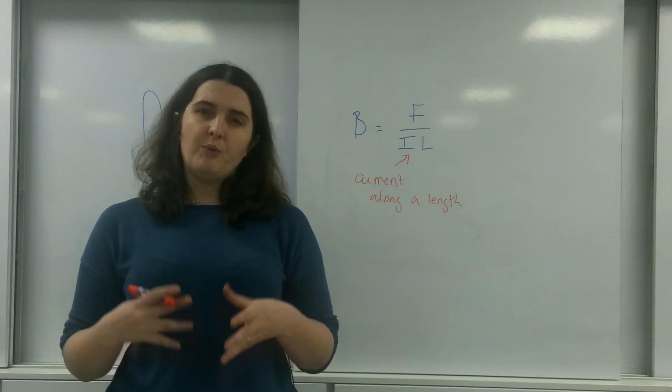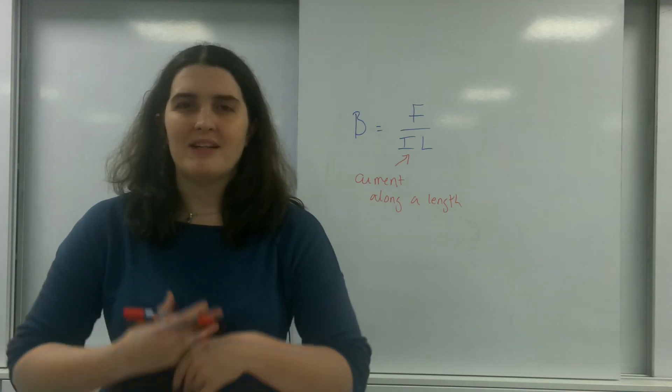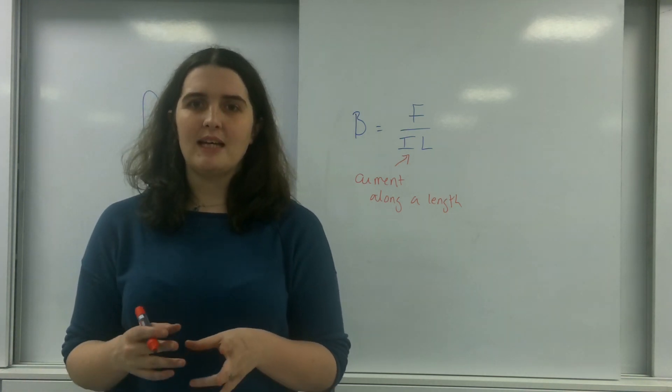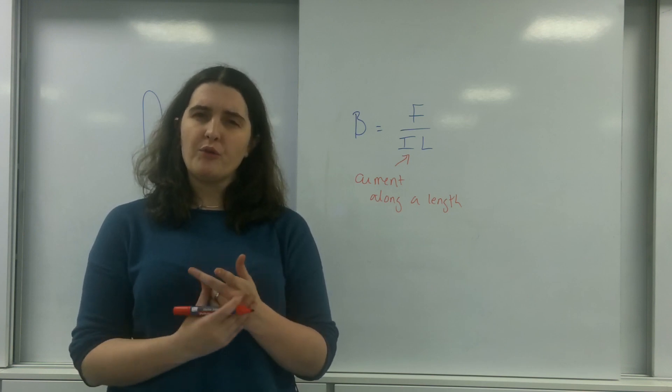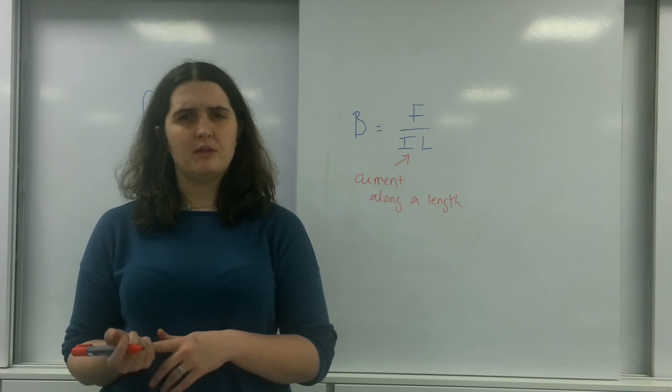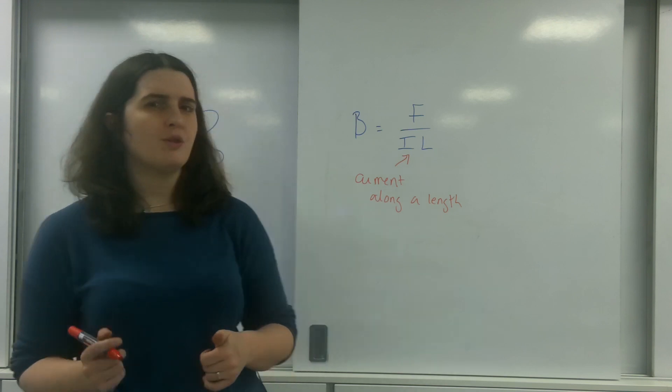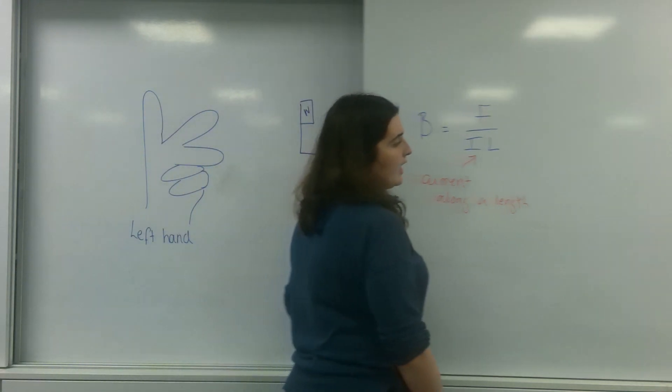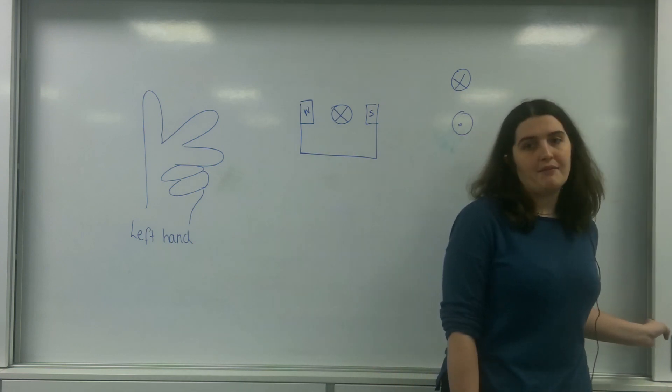So what I'm going to do, what Fleming did, is he actually worked out that there must be a relationship between what direction the current was moving, how the field that it was in was working, and the force it would go into. And he worked this thing called Fleming's left-hand rule.